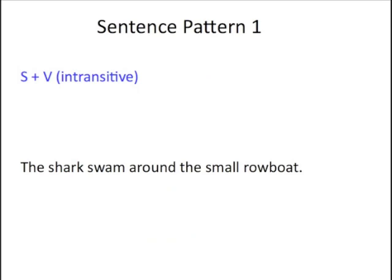Let's go over the sentence patterns your book talked about — it's a helpful shorthand when talking about different patterns of what can happen in a clause. Sentence Pattern One is a subject and an intransitive verb with no other complements coming after it. Here's an example of a Pattern One sentence: 'The shark swam around the small rowboat.'